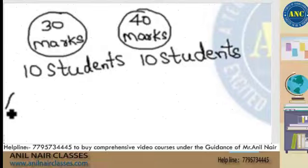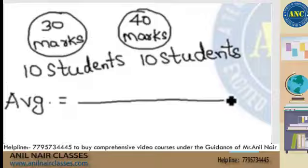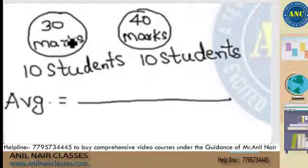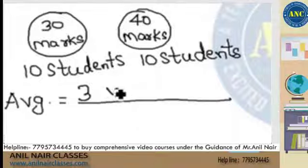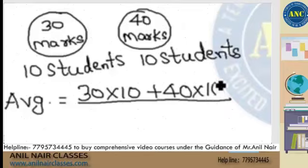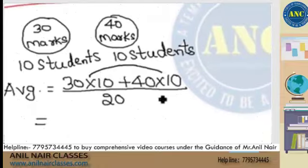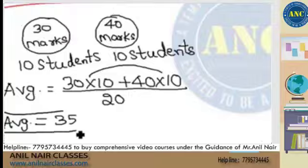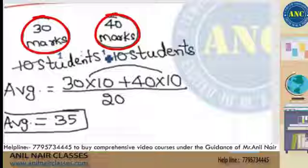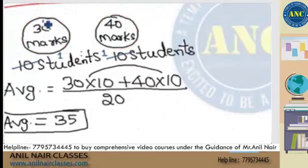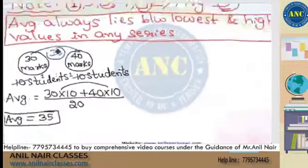I need to find the average marks of both sections. So it is 30 into 10 plus 40 into 10, divided by total number of students, which is 10 plus 10 = 20. That gives 300 plus 400 = 700 divided by 20, which is 35. The ratio of Section A to Section B students is equal, so average is simply the average of the given marks: 30 plus 40 divided by 2, which is 35.